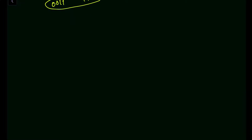Another two-byte instruction example is ANI F0H. ANI means a logical AND operation of the given immediate data with the content of the accumulator. Suppose the content of the accumulator is A9H. In binary, A is 1010 and 9 is 1001 — so the accumulator holds 1010 1001.